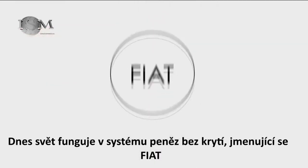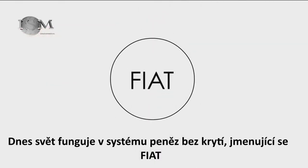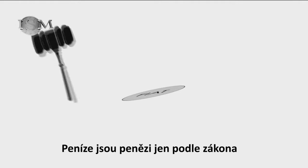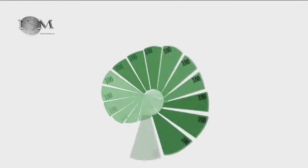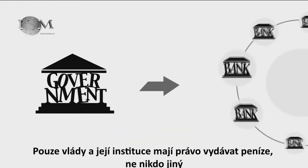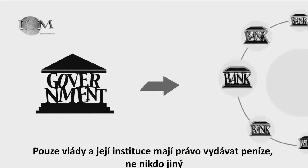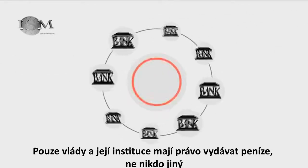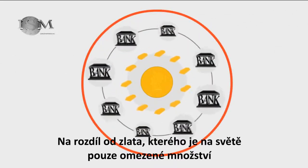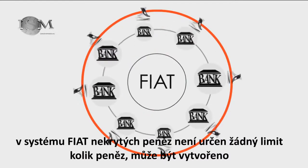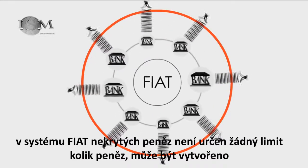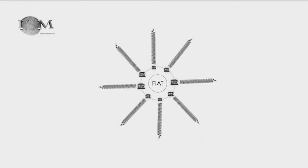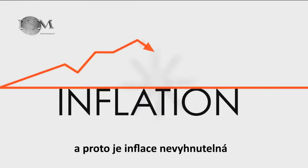Now, the world operates under a system of money and credit known as fiat. It's the law that what we use as money be money. The government and its banking agencies have the power to issue money, but no one else may do so. Unlike gold, of which there is a finite amount in the world, with this fiat system there is no limit to how much money can be created, so inflation becomes inevitable.